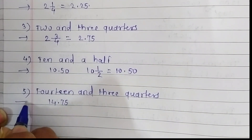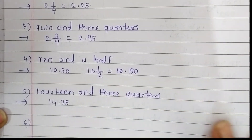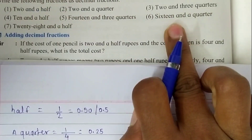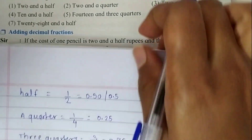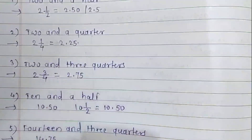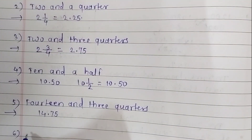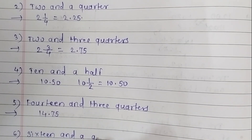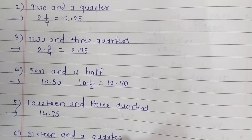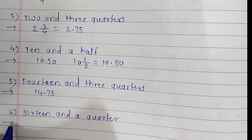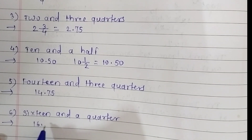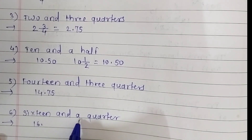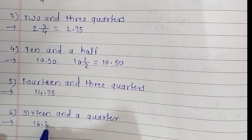Now the sixth question is sixteen and a quarter. The answer of this question is sixteen point twenty-five.